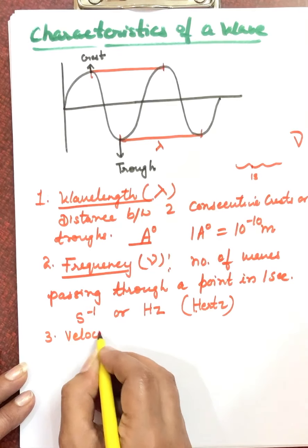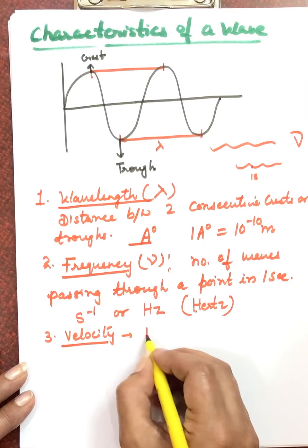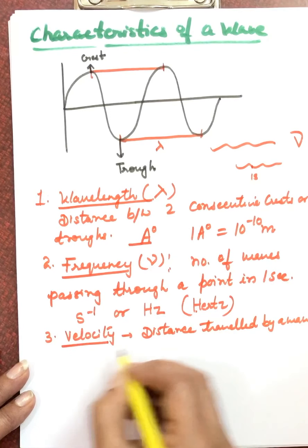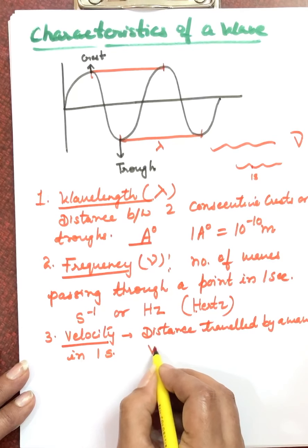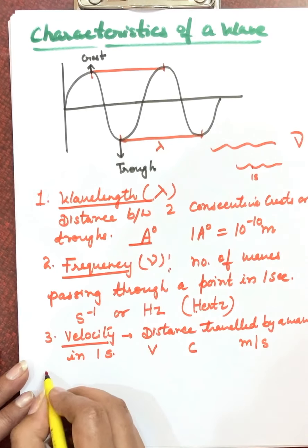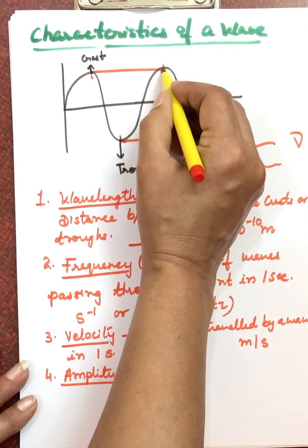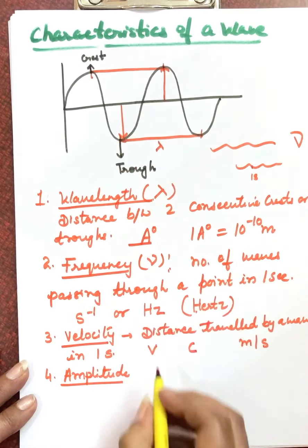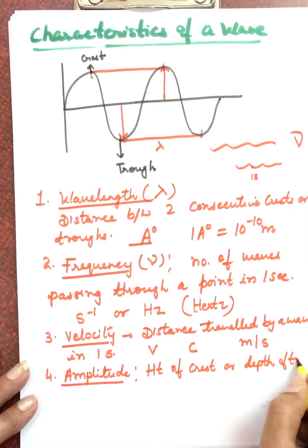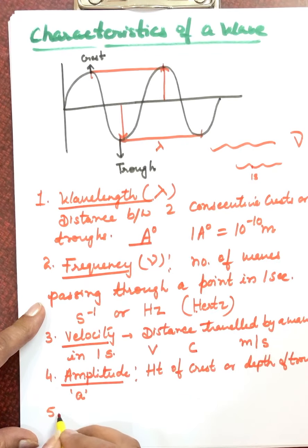Next is velocity. Velocity is the distance travelled by the wave in one second. It is represented by the symbol V, or C for light. The unit for velocity is meters per second. Next is amplitude, denoted by the symbol small 'a'. Amplitude is the height of the crest or the depth of the trough of a wave. Units of distance are used for amplitude.